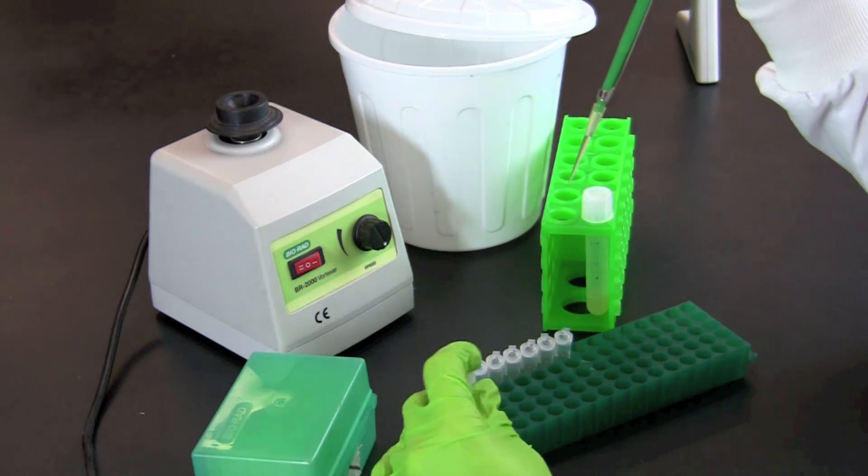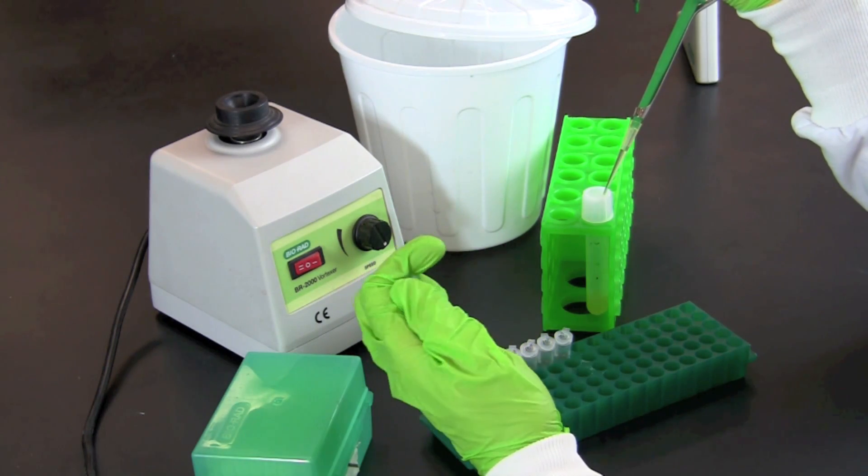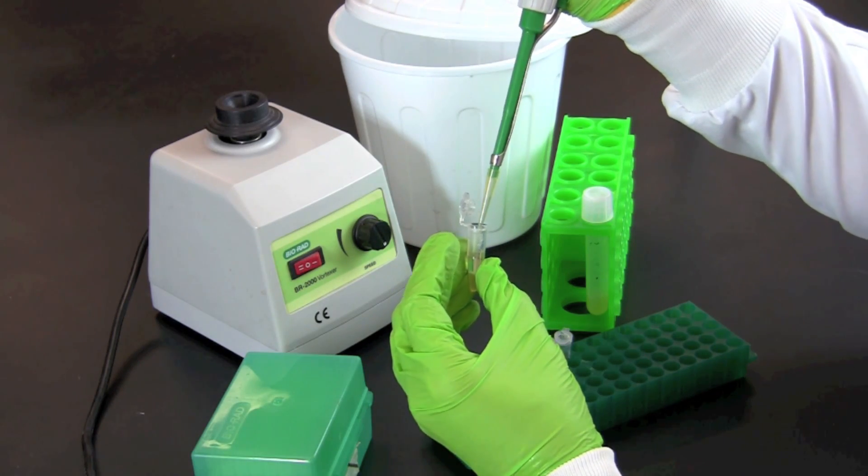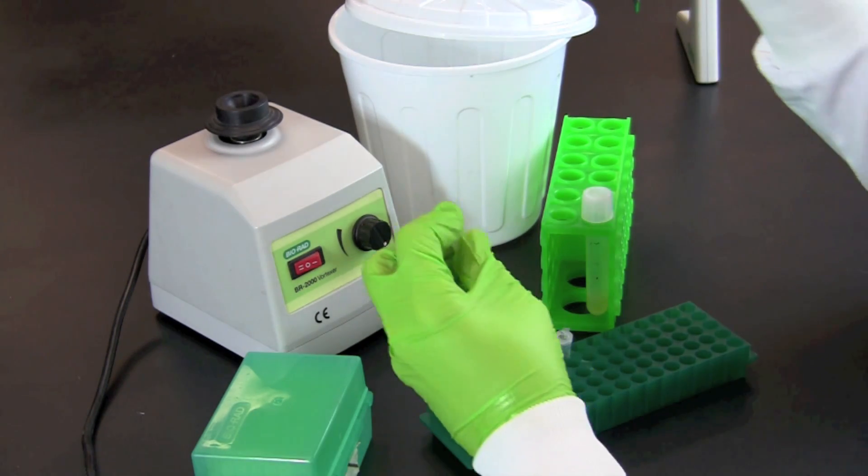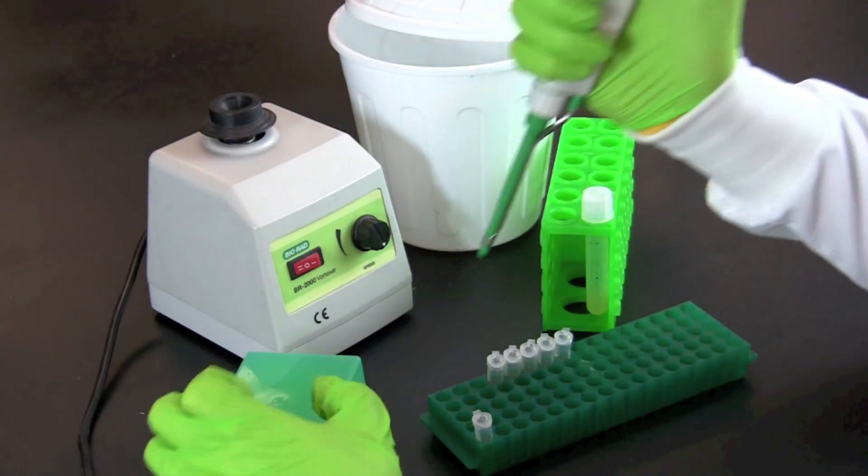Remove 100 microliters of diluted cell culture from the tube labeled 10 to the 1st. Mix by vortexing or pipetting up and down at least 5 times.